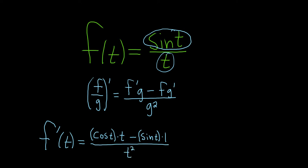I'll use a different color here. So it's the derivative of the top, which is cosine t, times the bottom, which is t, minus the top, times the derivative of the bottom, which is 1, over the bottom one squared.